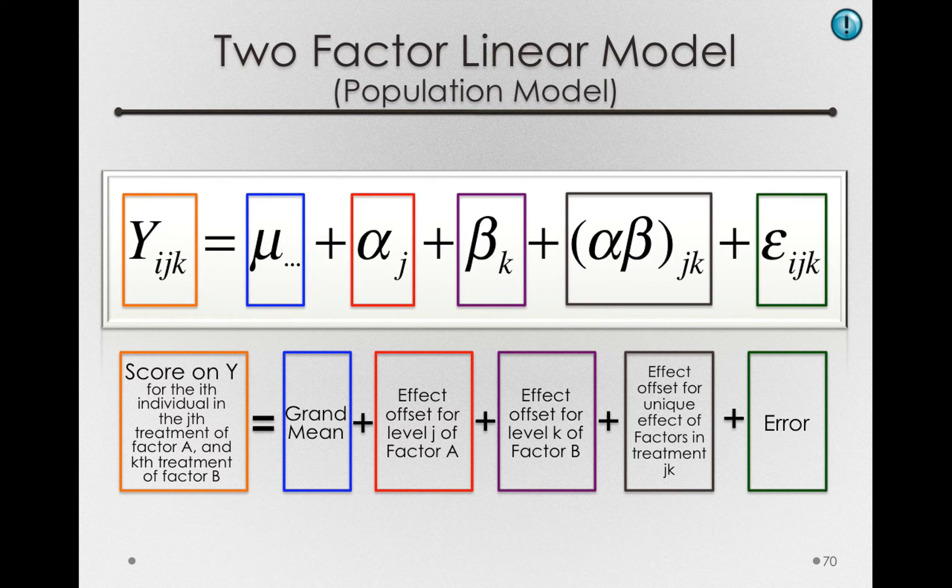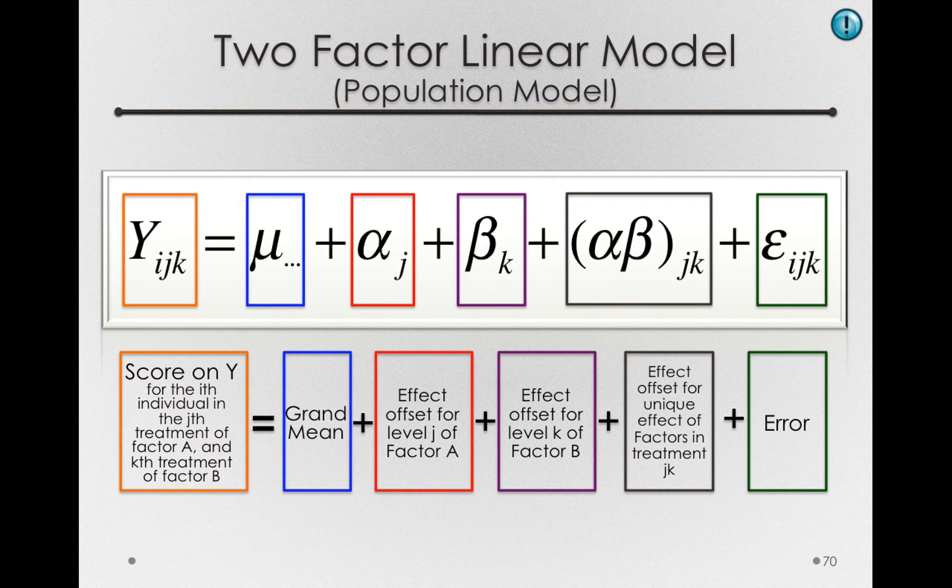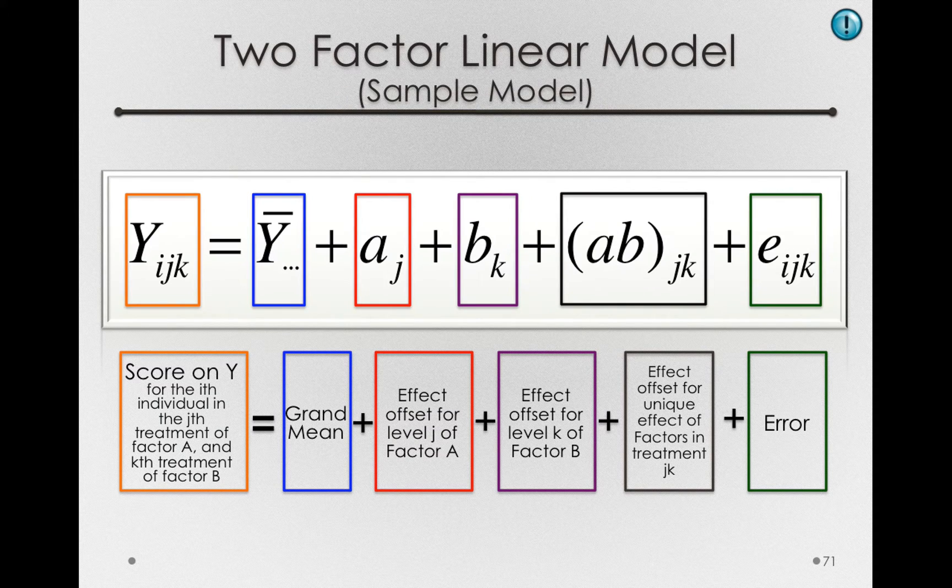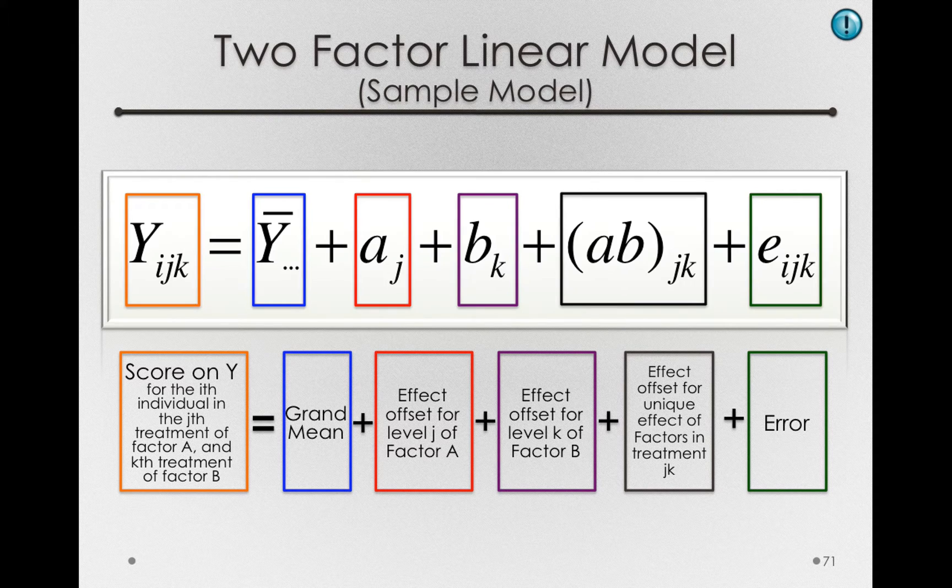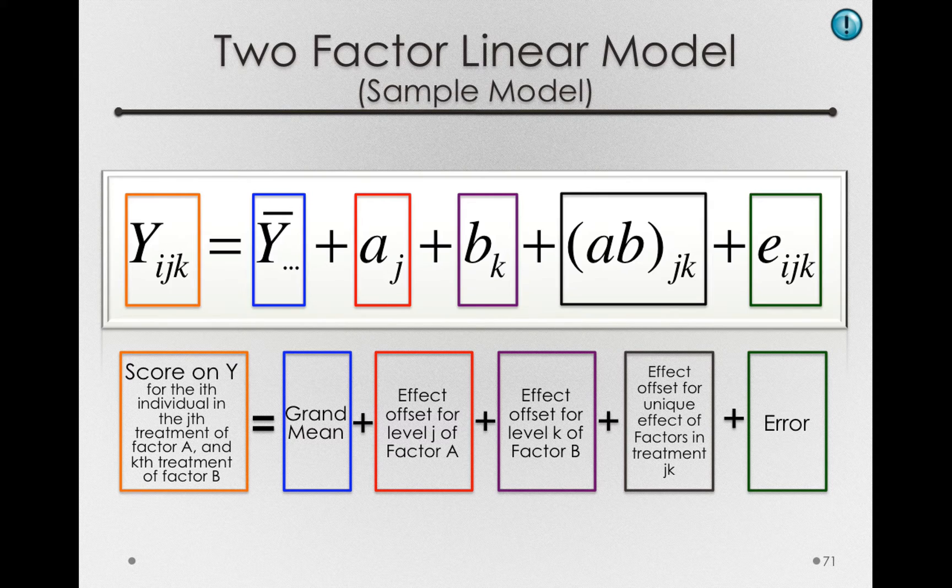Now that we've seen the two-factor population model, let's explore the two-factor sample model and decompose for our sample the different terms in our model. The two-factor sample model will look just like our population model, but rather than use the Greek symbols, we'll simply use the Roman characters to acknowledge the fact that we're simply making sample estimates of each of these terms.